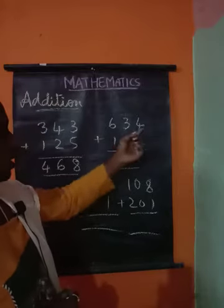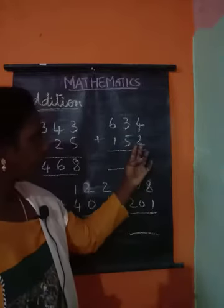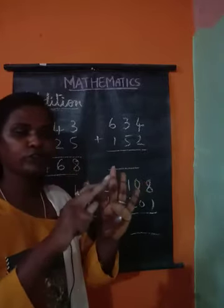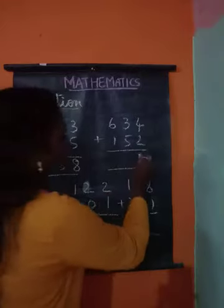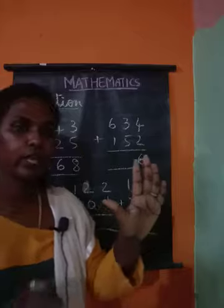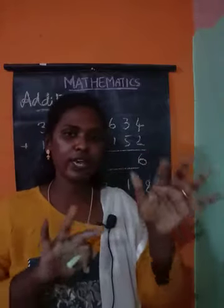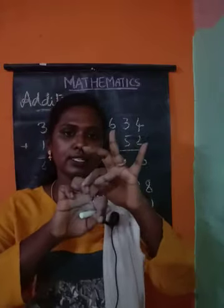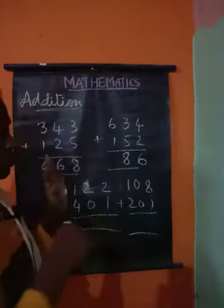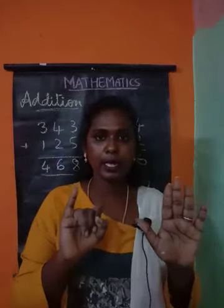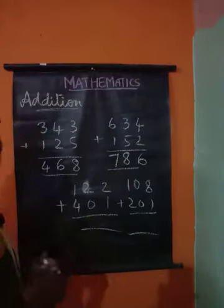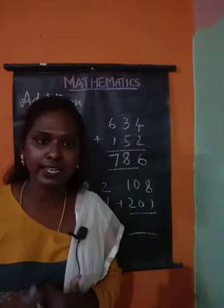Let us move to the next problem. I have 4 and below 4 I have 2. 4 and 2: counting 4, 5, 6 — so 6. Then 5 and 3: counting 5, 6, 7, 8 — so 8. Then 6 and 1 — how much? It is 7. I hope you are understanding and doing well.